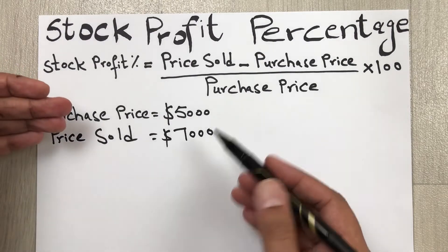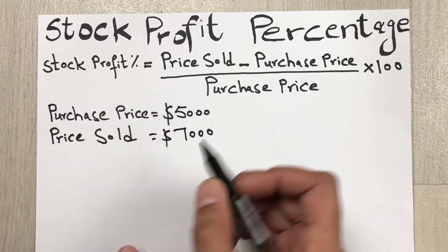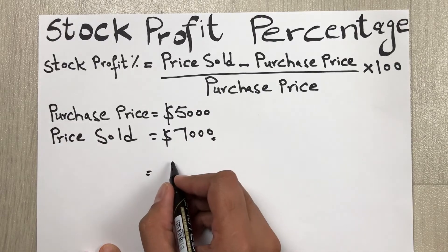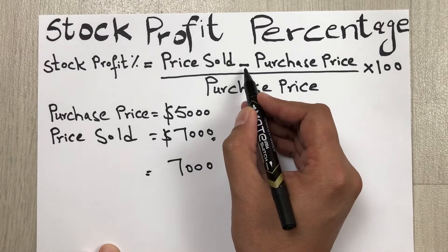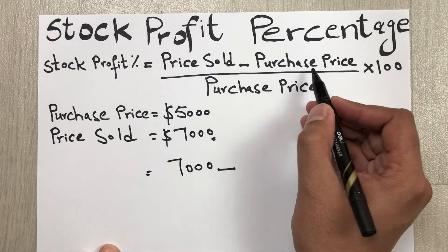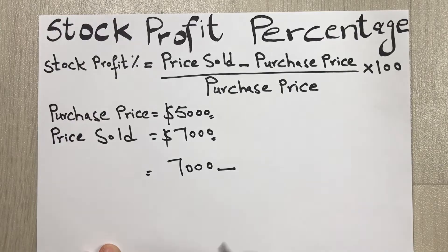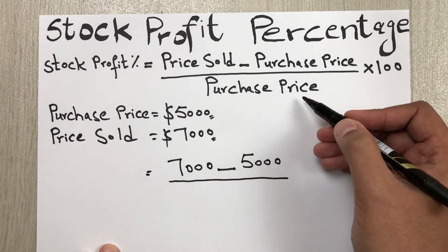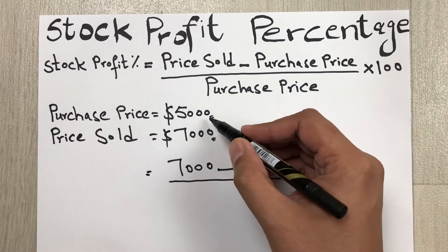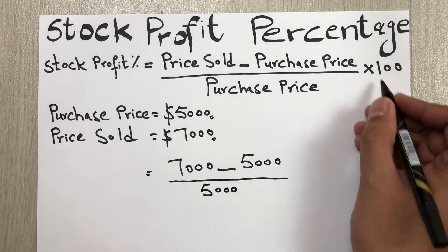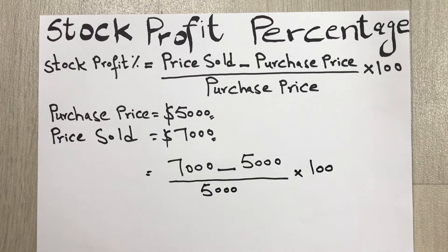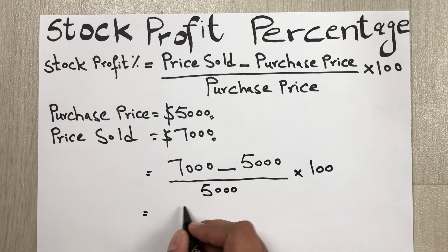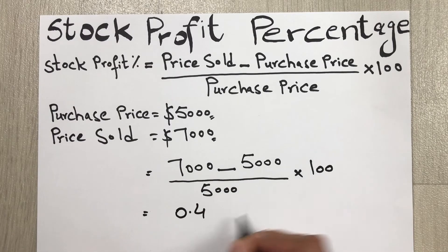Now we have the values and we will put them into the formula. Price sold is seven thousand, minus purchase price of five thousand, divided by purchase price of five thousand again, then multiply by 100.